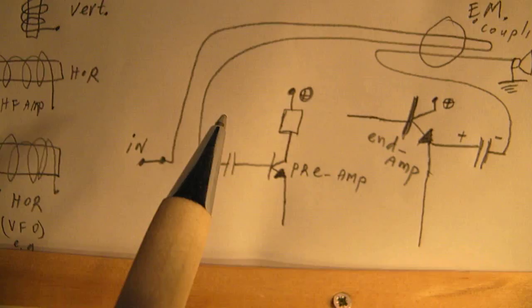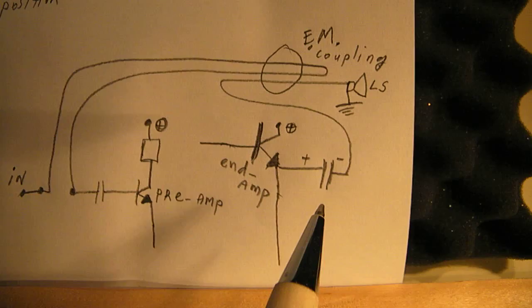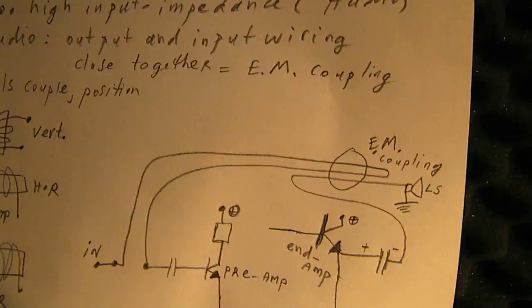So keep the input wiring to the first transistor and the output wiring to the loudspeaker completely separated.